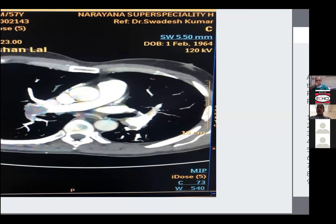Upon seeing this, after informed consent, we thrombolyzed the patient with injection tenecteplase. The patient's weight was 60 kg, so we gave him 30 mg tenecteplase. The approved thrombolytic is actually alteplase TPA, but there is a lot of data on tenecteplase as well — it is a fibrin-specific thrombolytic agent. The advantage is that tenecteplase was available, since thrombolytics are now virtually unavailable in many hospitals with active cath labs.